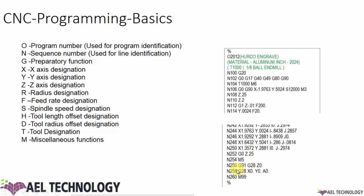A fully written program would look like this — with a header containing a program number, then the tool number and what tool you are going to run. These codes start with a program number, G20, and you can find M codes along with axis codes, feed rates, and spindle speed.